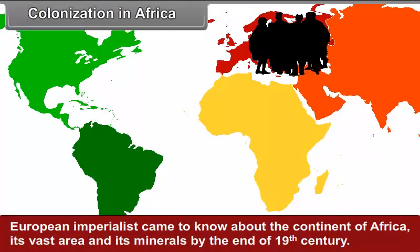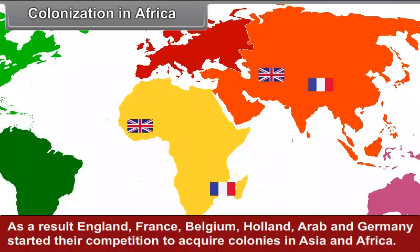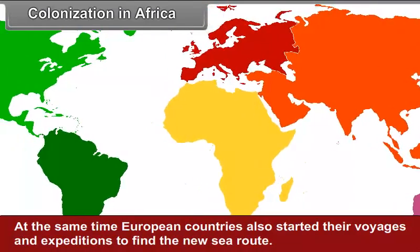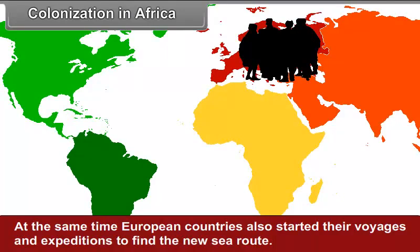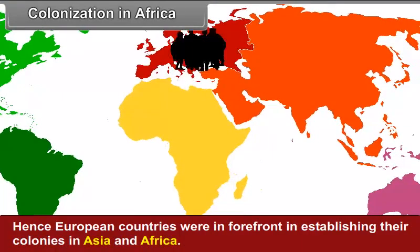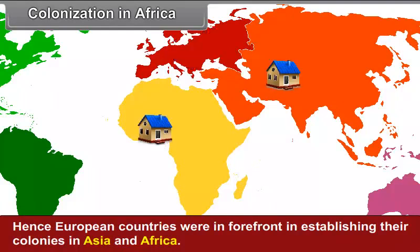European imperialists came to know about the continent of Africa, its vast area and its minerals by the end of the 19th century. As a result, England, France, Belgium, Holland, and Germany started their competition to acquire colonies in Asia and Africa. At the same time, European countries also started their voyages and expeditions to find new sea routes. Hence, European countries were in the forefront in establishing their colonies in Asia and Africa.